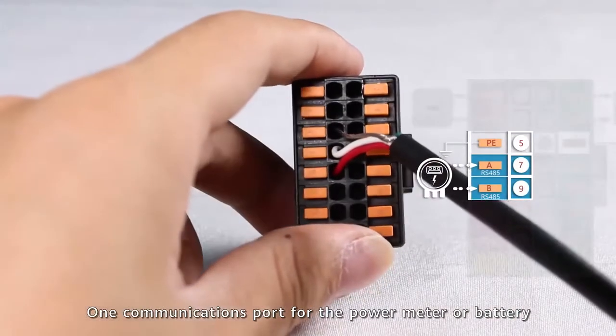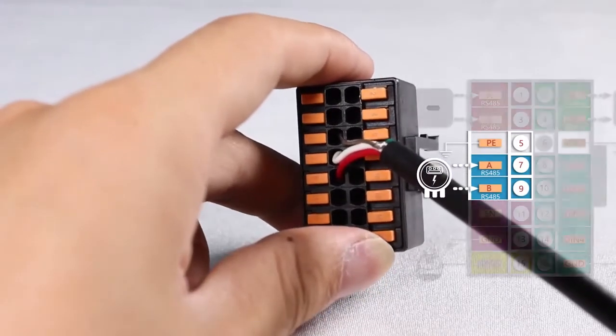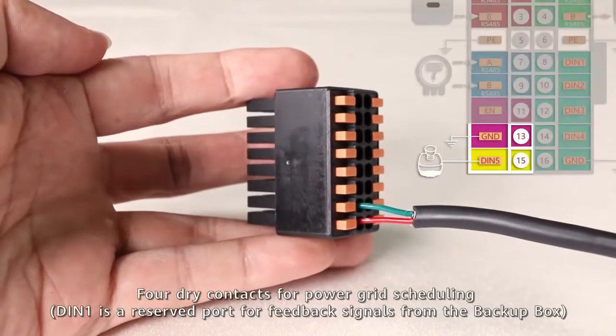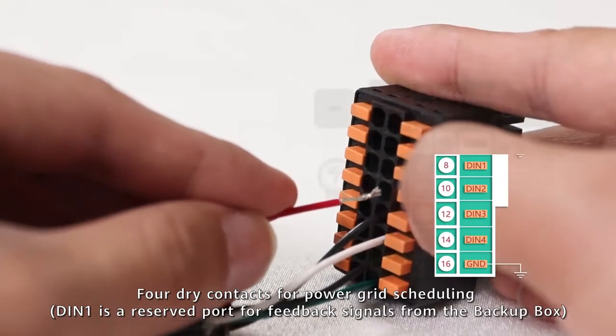One communications port for the power meter or battery. One rapid shutdown signal cable port. Four dry contacts for power grid scheduling.